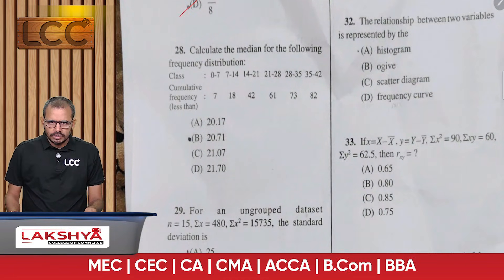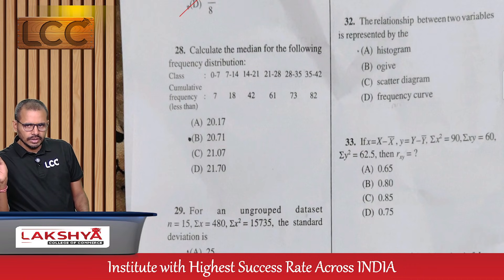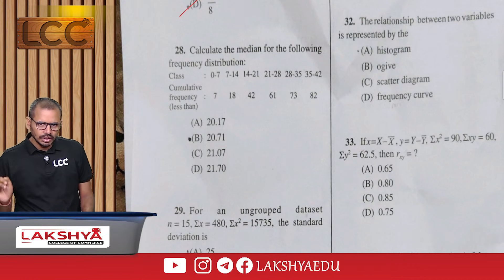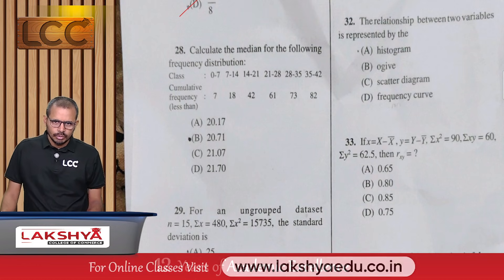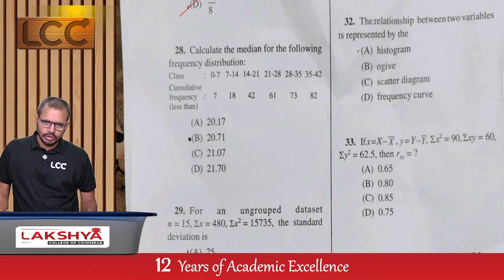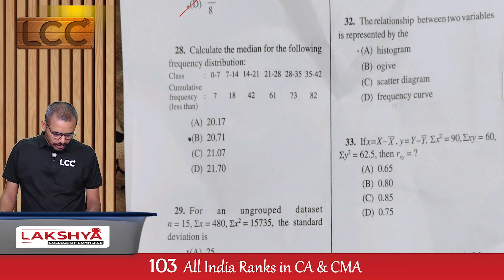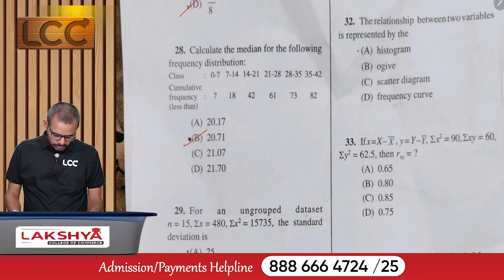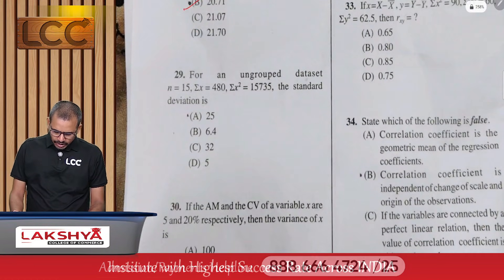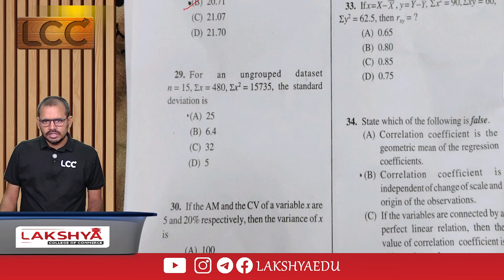Question 28: Calculate the median from the distribution with class intervals 0–7, 7–14, 14–21, 21–28, 28–35, 35–42 and cumulative frequencies 7, 18, 42, 61, 73, 82 — option B.